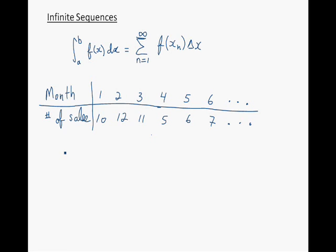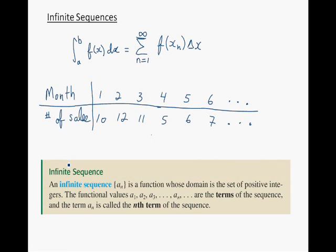Let's now look at the definition of an infinite sequence. An infinite sequence is a function whose domain is the set of positive integers. The functional values a1, a2, a3, ..., an are the terms of the sequence, and the term an is called the nth term of the sequence.